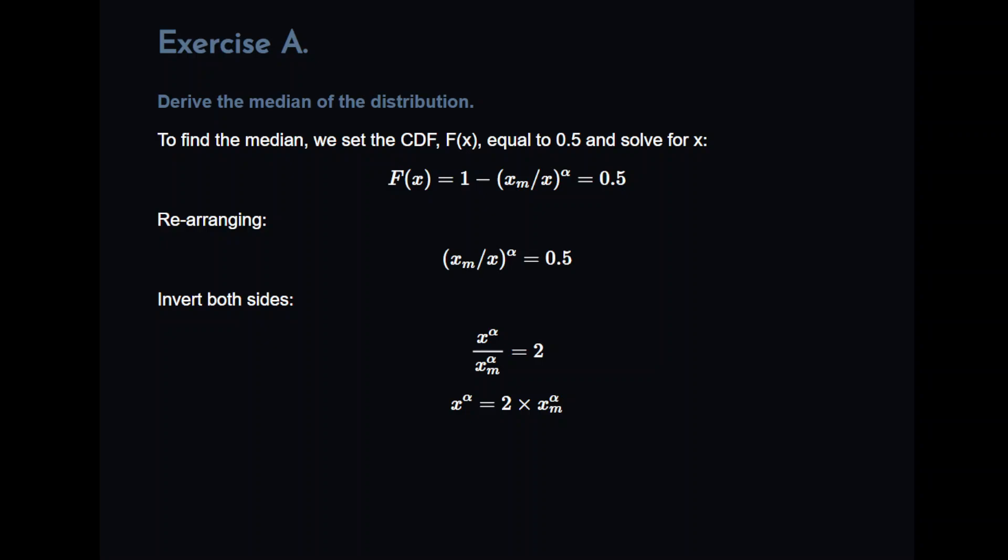In this particular case, F of X, the cumulative distribution function is 1 minus XM divided by X to the power of alpha. And recall that XM is a parameter of the distribution where X is the value that we are trying to solve. And we have alpha there as well as the power. And we are going to let that equal to 0.5. So the first thing we are going to do is just rearrange that expression algebraically, just simplify it a bit. And we have XM divided by X to the power of alpha equals 0.5.